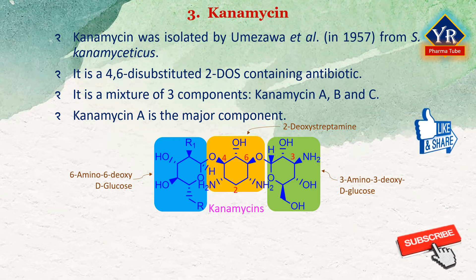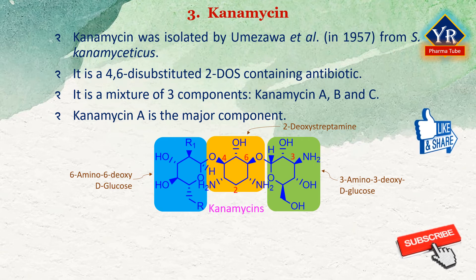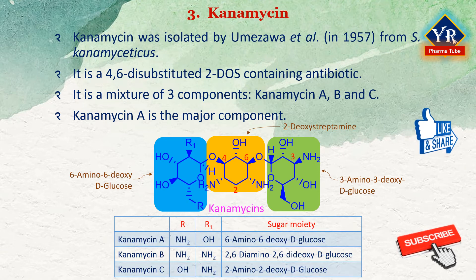As shown in the structure, kanamycin A, B, and C all contain the 3-amino-3-deoxy-D-glucose, also known as kanosamine moiety, which is glycosidically bound to the hydroxyl group at C6 of 2-deoxystreptamine. They are differentiated by the second amino sugar on the hydroxyl group at C4 of 2-deoxystreptamine. The kanamycins differ only in the sugar moieties attached to the glycosidic oxygen on the fourth position of the central deoxystreptamine.